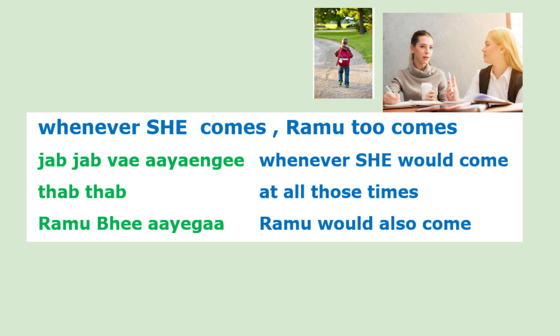Jab jab ve aayengi — whenever she would come. Tab tab — at all those times. Ramu ve aayega — Ramu would also come.